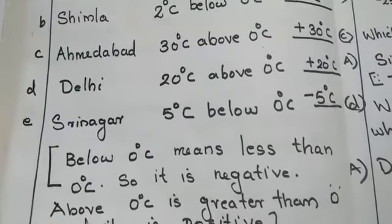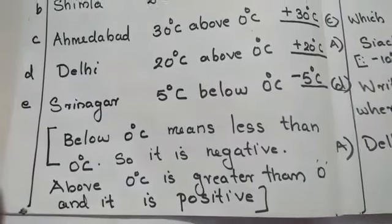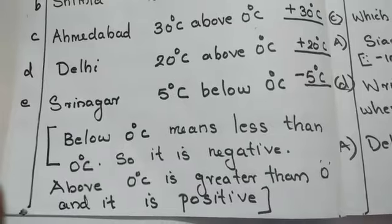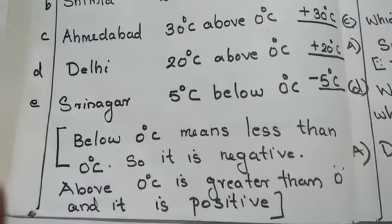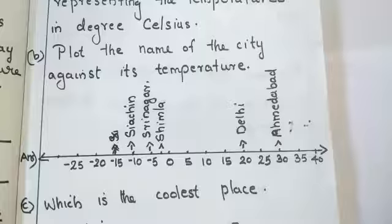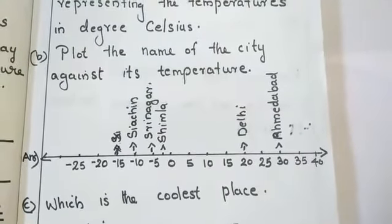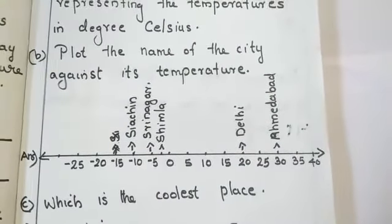Understood? Below 0, less than 0, it is negative. Above 0 is greater than 0. So, it is positive. OK. Using the number line we can plot the temperatures of different cities. Then, from the above answers we can write the name of the cities against the temperature.